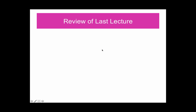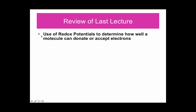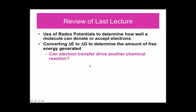From the last set of lectures, let's just have a small review. We looked at the use of redox potentials to determine how well a molecule can donate or accept electrons. We looked at how the redox tower can help us understand which molecules are going to be donors, which molecules are going to be recipients of electrons, and that the molecule with the more positive redox potential will be accepting the electrons. We also looked at ways to take the change in redox potential and convert that to a change in free energy to determine the amount of free energy generated in a reaction.